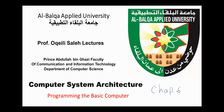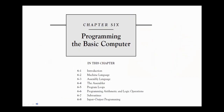Hello again. Today we start chapter six on computer system architecture: programming the basic computer. Topics covered in this chapter are introduction, machine language, assembly language, disassembler, program loops, programming arithmetic and logic operations, subroutines, and input-output programming.